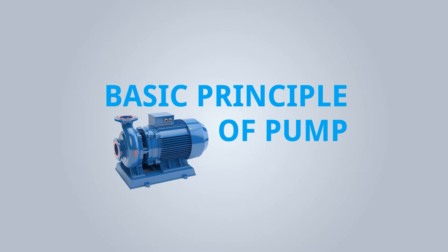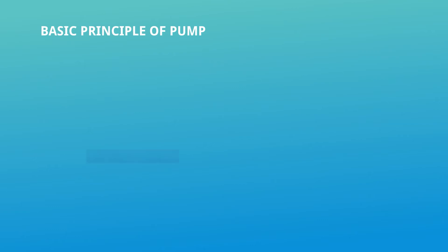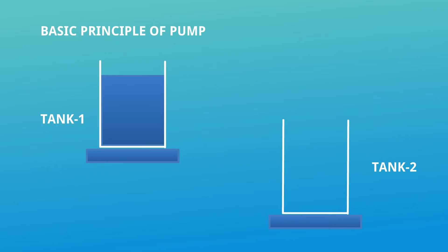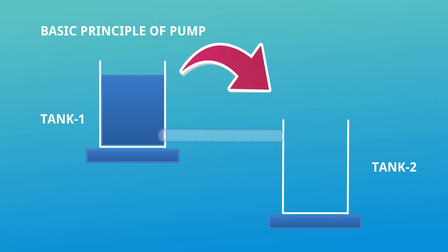Welcome to Max Studies. Let's explore the basic principle of a pump. Consider tank 1 which has some fluid, and tank 2. Tank 2 is at a lower elevation with respect to tank 1. To transfer the fluid, we simply connect the two tanks with a pipe and valve. Once you open the valve, the fluid transfers from tank 1 to tank 2 by gravitation.